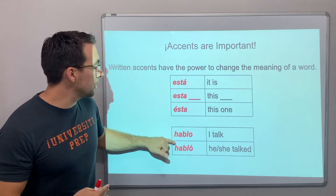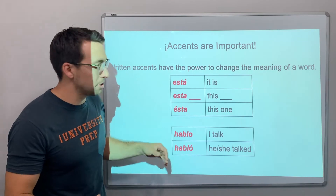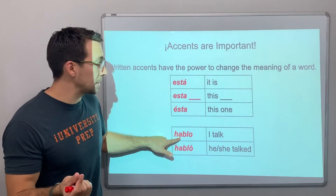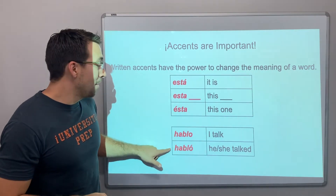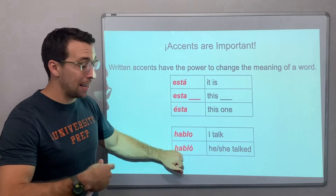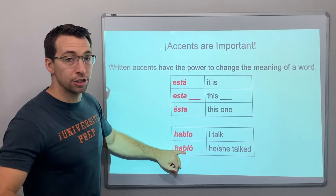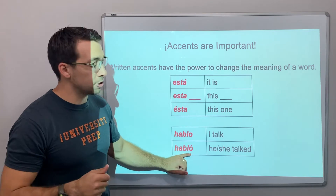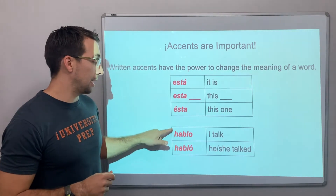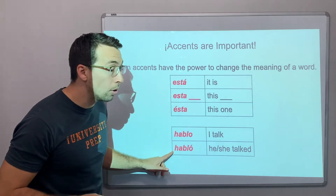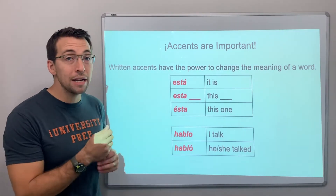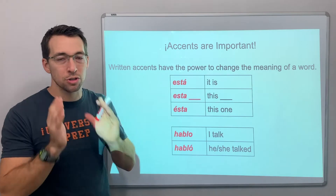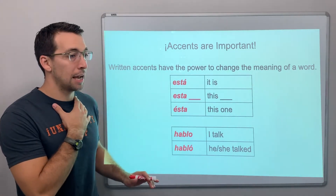Let's talk about how an accent changes meaning. Yo hablo — this A receives the emphasis, meaning 'I talk.' If I say habló, with the emphasis on that O — él habló anoche, he spoke last night. Ella habló conmigo ayer — she talked to me yesterday. Hablo versus habló. As you're learning to read and playing with emphasis and accented vowels, you can bob your head to help give you a physical cue.